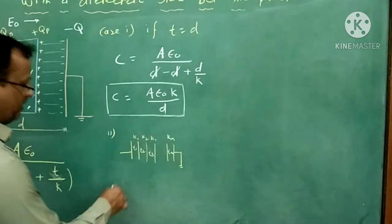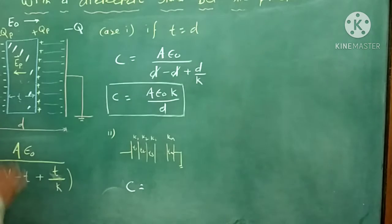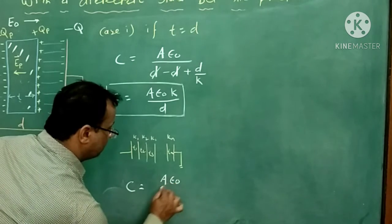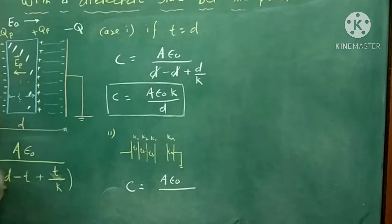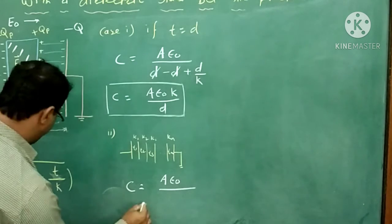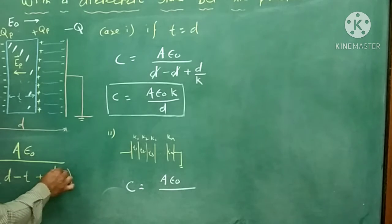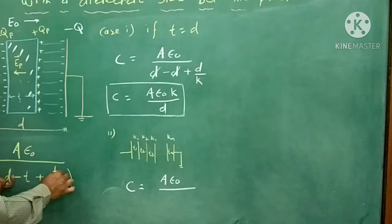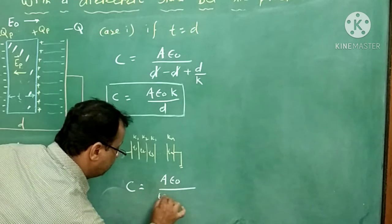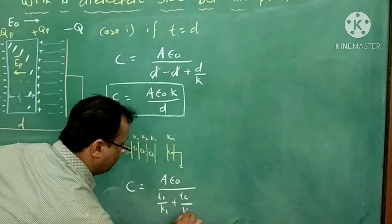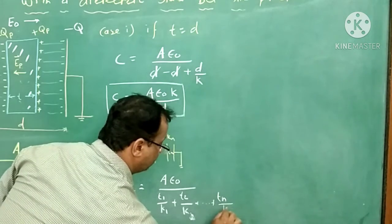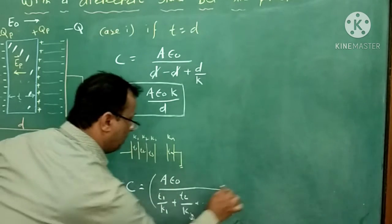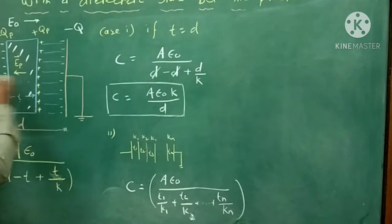Then the effective capacitance of this capacitor C is given by the same formula. A·ε₀ is as it is, D is as it is, but the value of T is nothing but D since we introduce the slabs in the whole space. So D minus D is cancelled, and we simply get T upon K. But since the thickness and dielectric constant of different slabs are different, this becomes T1/K1 + T2/K2 + ... + Tn/Kn.